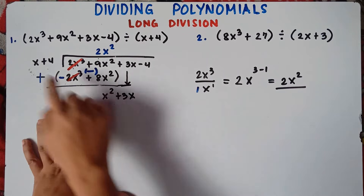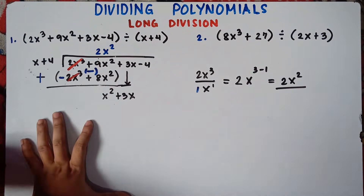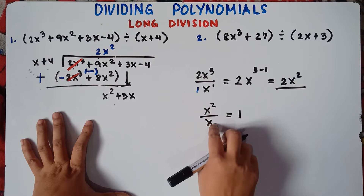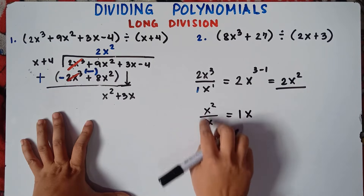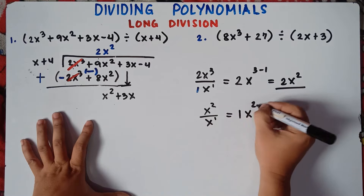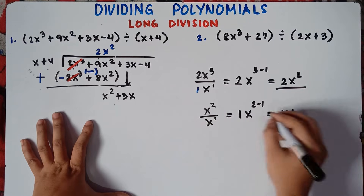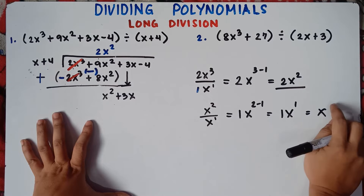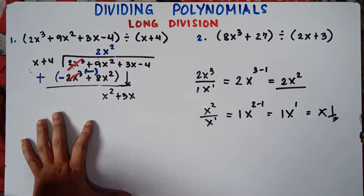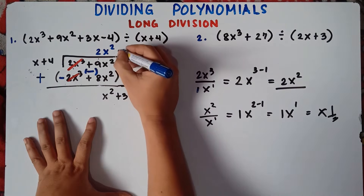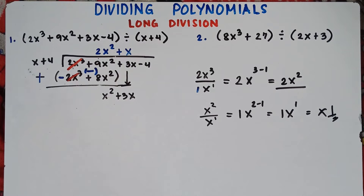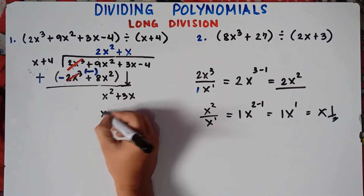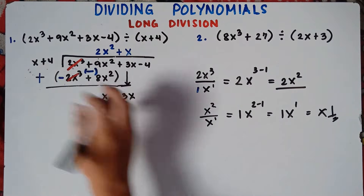Now divide x² by x. Understood there is a coefficient of 1 on each, so 1 divided by 1 is 1, and x² divided by x subtracts exponents: 2 minus 1 gives x¹ or simply x. So the answer is positive x. Then multiply: x times x gives x², and x times 4 gives positive 4x.